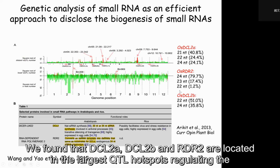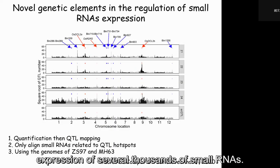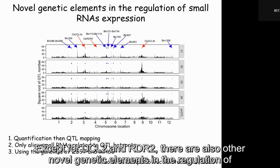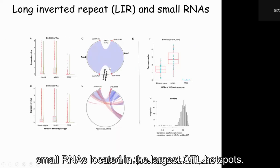We found that DCL2A, DCL2B, and RDL2 were located in the largest locus hotspot, regulating the expression of more than 7,000 sRNAs. Except for DCL2 and RDL2, there are also other novel genetic elements in the regulation of sRNA located in the largest locus hotspot.